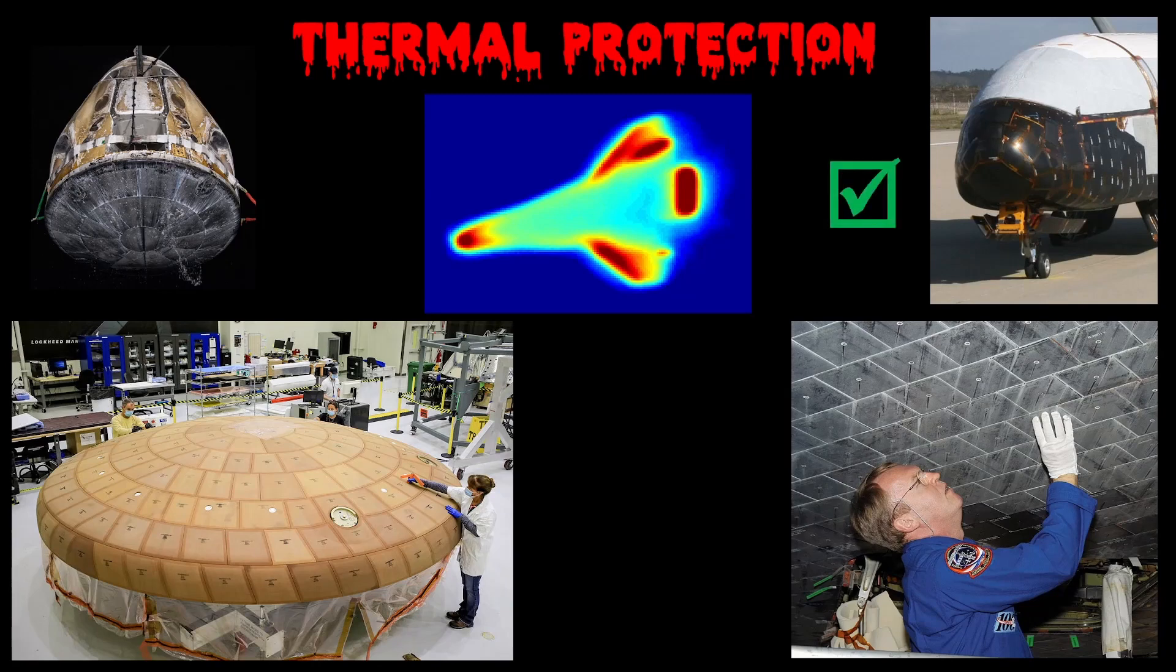Since we want to be easily reusable, some sort of tile-based approach makes more sense. We will therefore need to cover the bottom of our second stage with heat shield tiles.